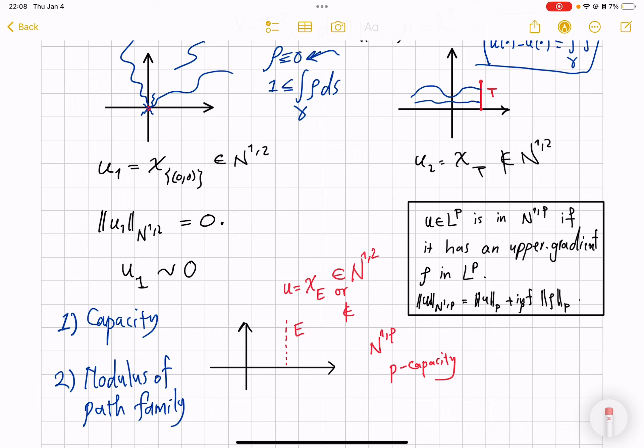Or you can say that the modulus of all curves, which end up passing through this T is also not negligible, not zero. So the collection of all curves passing through this segment by help of Fubini's theorem can be shown to be positive, although we haven't even defined what modulus is. But anyway, this is kind of what is going to happen next in our treatment of Newtonian Sobolev spaces.